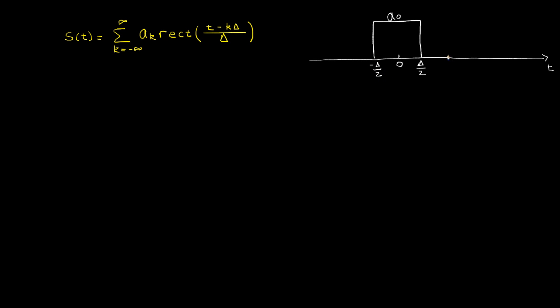And then out here at delta we're going to have another one. And it's going to have some height a 1 and it will extend out to 3 delta over 2. And that kind of thing will keep happening out that direction. And then back in this direction we might have at negative delta, we might actually have something that has a negative amplitude associated with it.